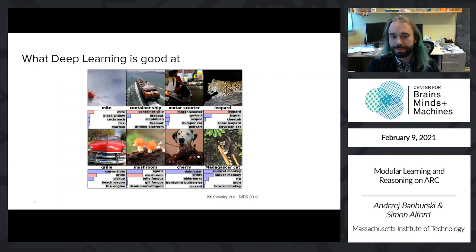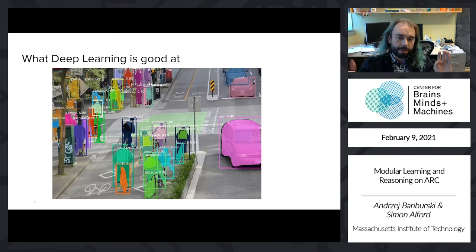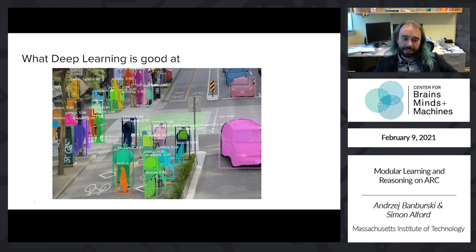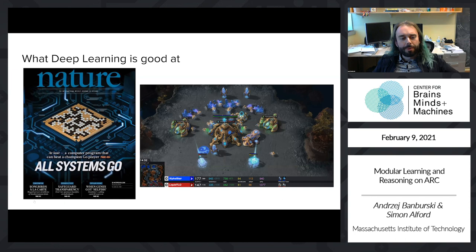Deep learning has been successful in the last decade but it's interesting to look at what it's actually good for and what it's not so good for. It's pretty decent at object classification — something like ImageNet. It's also pretty good at tasks like semantic segmentation, giving us hope for things like self-driving cars. And it's been having great success at tasks requiring some kind of intelligence, like beating the best humans at Go or Starcraft, which have long been taken as benchmarks for real intelligence.